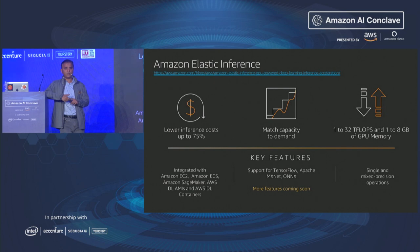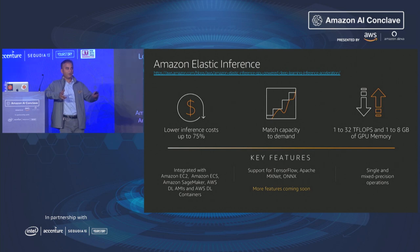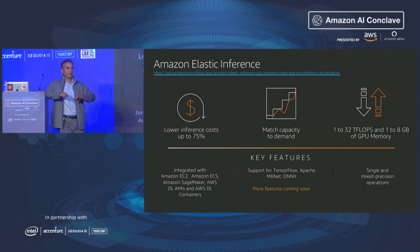Elastic inference supports TensorFlow, MXNet, and the ONNX framework, with PyTorch support coming very soon. We're also building features like multi-accelerator support — attaching multiple EI interfaces to a compute instance, similar to having multiple network interfaces. It comes with single and mixed precision operations for additional performance. When using elastic inference with SageMaker, during prototyping in a notebook you can attach EI with a single parameter, run local mode serving with and without EI, and compare performance — then when you deploy to production, just specify the EI accelerator type in the API.